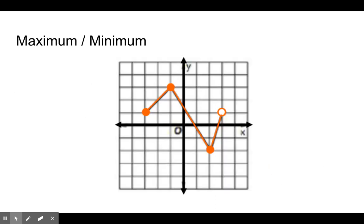If we look at this image, the highest point on this graph right here we call our maximum, or for short, our max. The lowest point on the graph is our minimum, or our smallest value, lowest point. So our maximum is the point negative 1, 3, and our minimum is the point 2, negative 2.